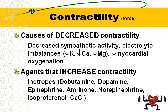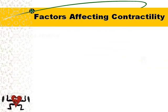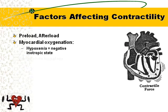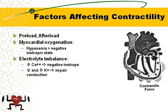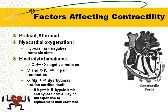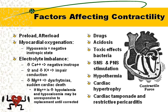What can increase contractility? Inotropes — drugs that make the heart pump better: dobutamine, dopamine, epinephrine, and calcium. There is quite a list of things that affect contractility: myocardial oxygenation, electrolyte imbalances, drugs, acidosis, sepsis, sympathetic or parasympathetic nerve stimulation, hypothermia, cardiac hypertrophy, tamponade, and restrictive pericarditis — all of those can affect the way the heart pumps.